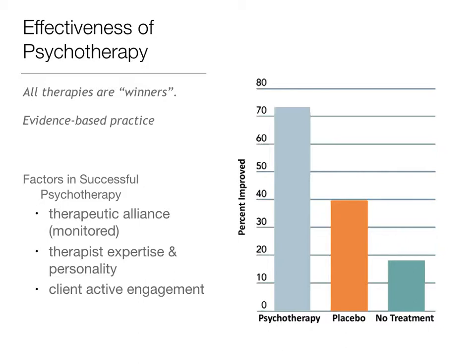Whether there's a cultural match between therapist and client matters, though they don't have to be from the same culture — the therapist just needs to be well-versed in the client's cultural perspectives. The same applies to gender. As shown in this graph, more than 70% of people are improved with psychotherapy, compared to less than 40% with a placebo and less than 20% with no treatment.